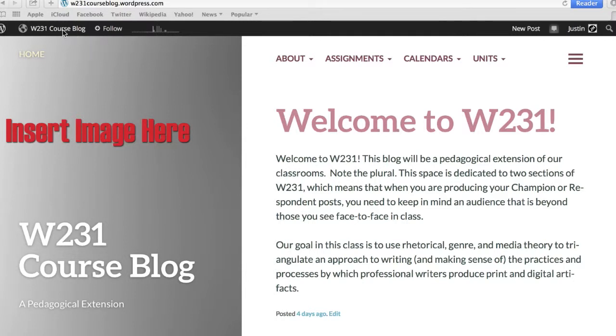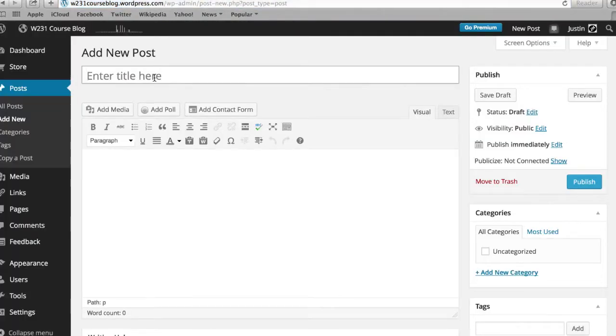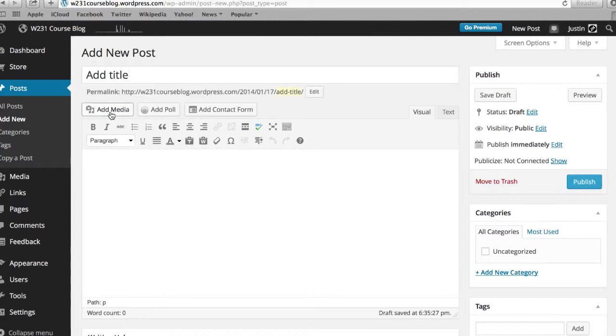So the first thing you're going to do once you've logged in is to go up to the W231 course blog link at the top, go under new and go to post. You can click on new post and that'll bring you to the post menu. You can add a title and you can add text if you want in the text box